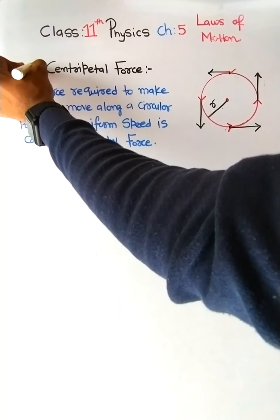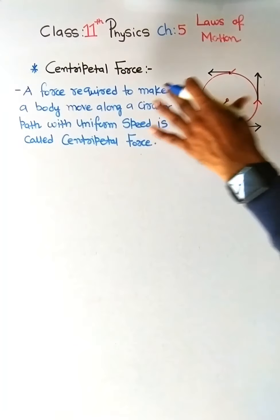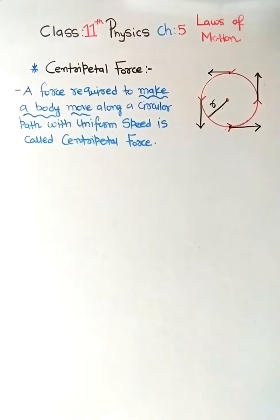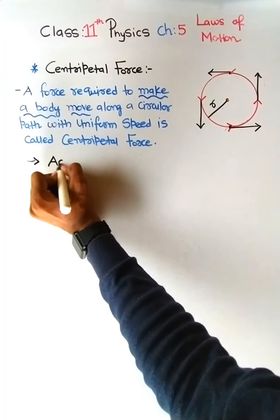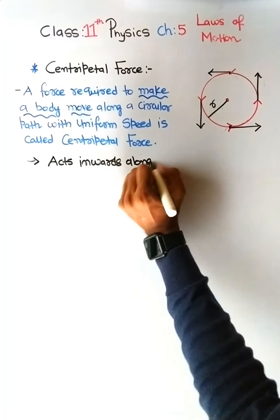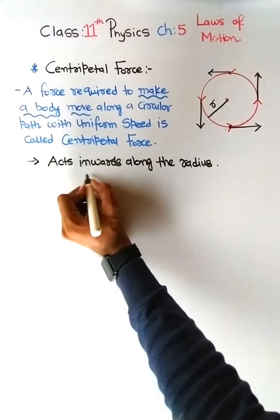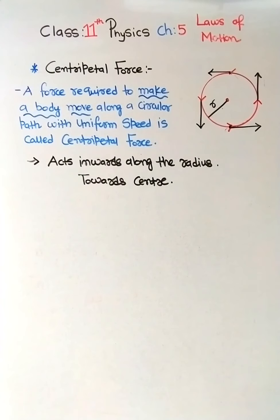We start with centripetal force. Centripetal force is a kind of force that is required to make a body move along a circular path with uniform speed. This force acts inwards along the radius and is directed towards the center.